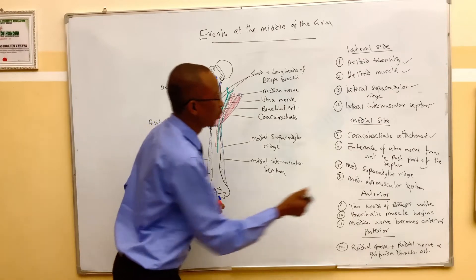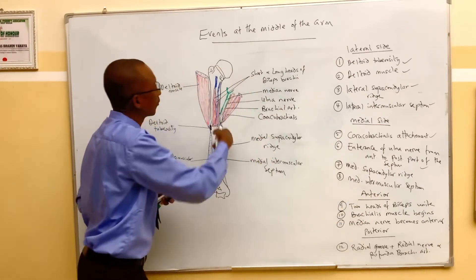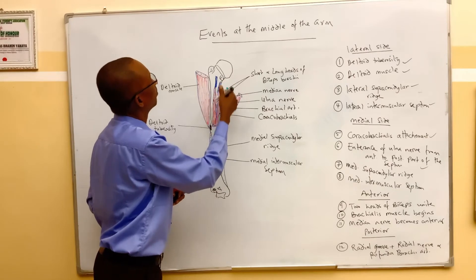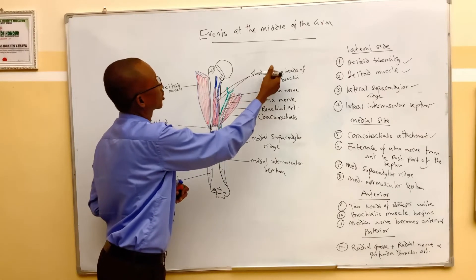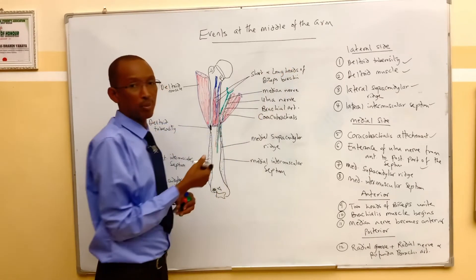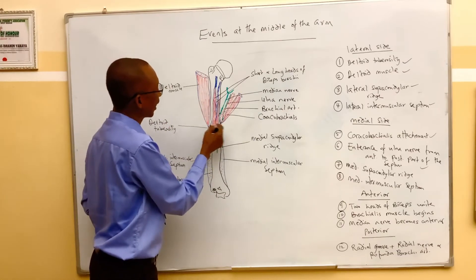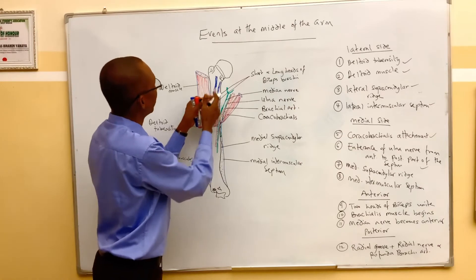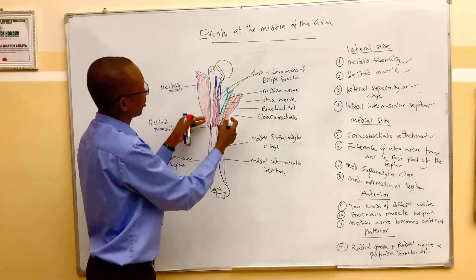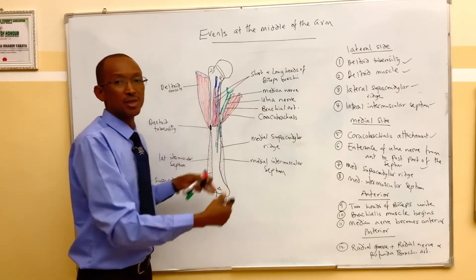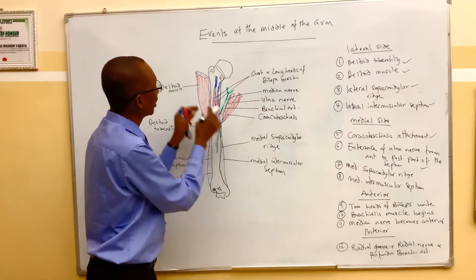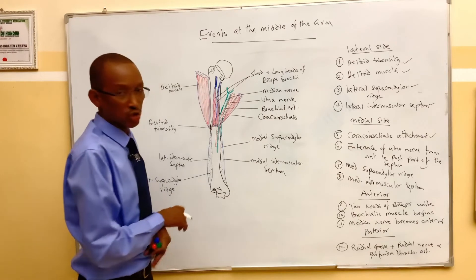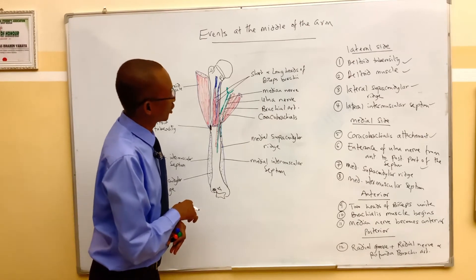When we look at the anterior aspect of the arm, the two heads of the biceps brachii muscle — that means the short head and the long head of the biceps brachii — the two together unite at the middle portion of the arm. Initially the two bellies are separate, and by the time they approach the middle of the arm they unite to form a common belly, which passes downward and gets attached into the radial tuberosity.